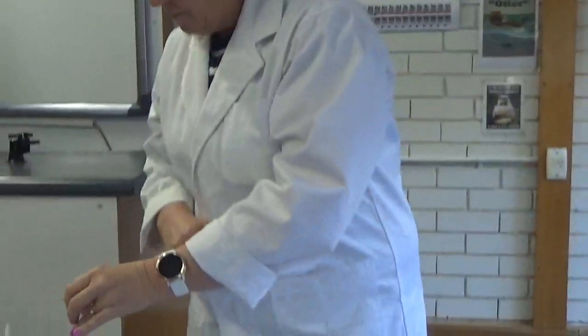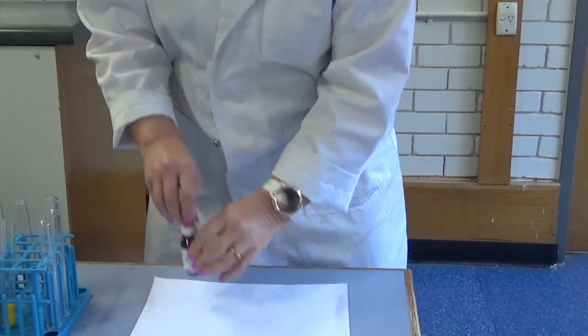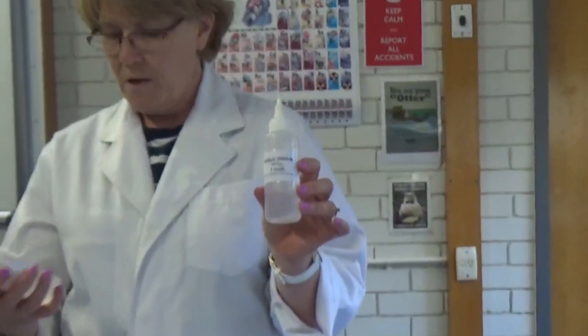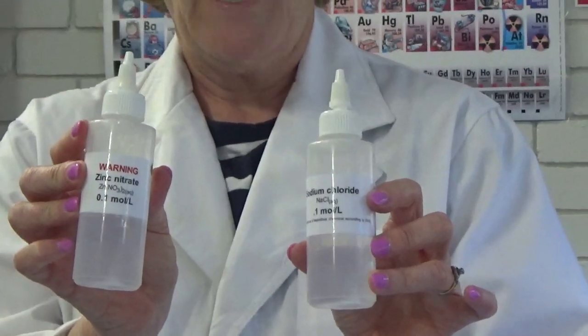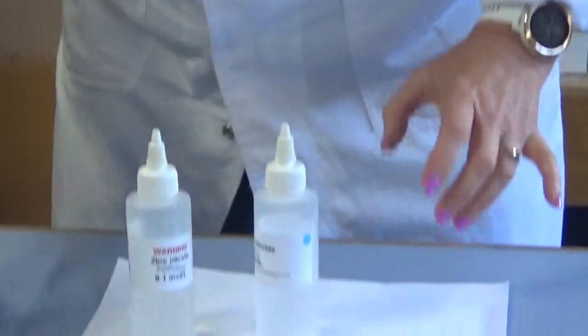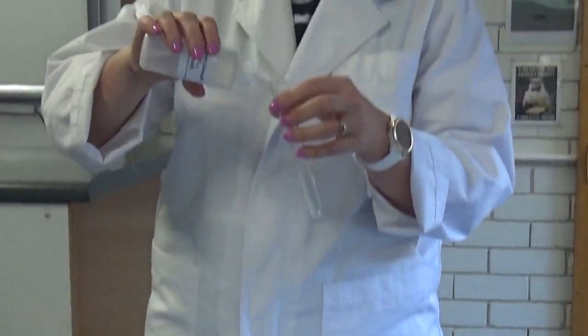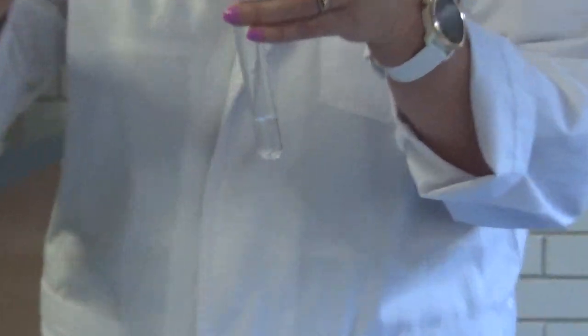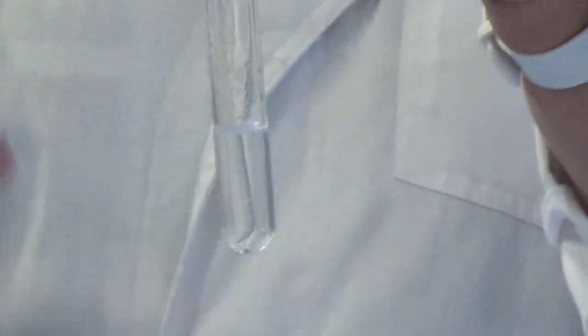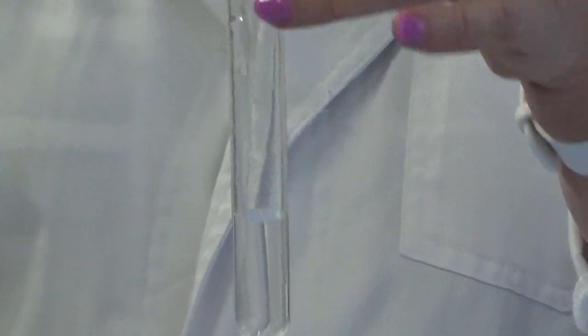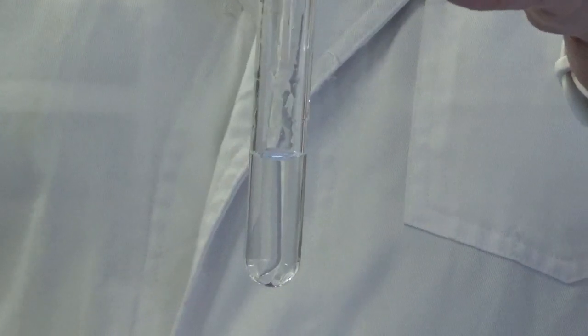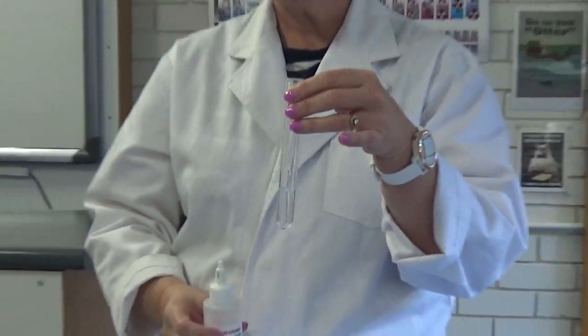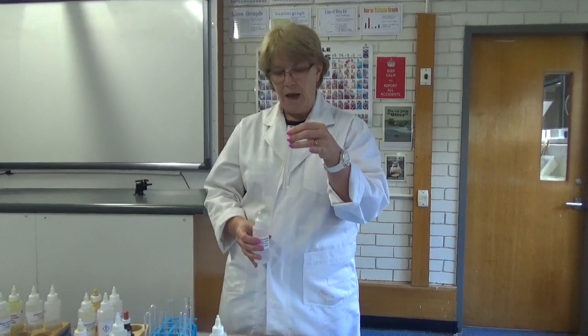Alright, let's try another one. Let's try some sodium chloride. Sodium chloride is just salt and we're going to put that with some zinc nitrate. We're going to see what happens with those two. Nothing. See, it doesn't happen all the time. So sometimes you get a precipitate and that shows the chemical reaction happened. Sometimes you don't get a precipitate.